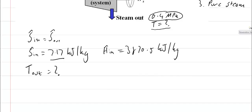So my temperature out is 200 degrees Celsius and my enthalpy at this stage is equal to 2860.5 kilojoules per kilogram.